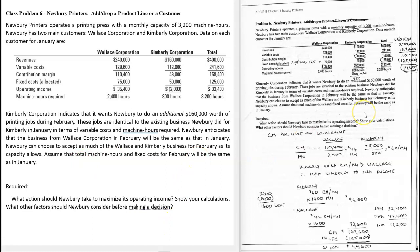So what should they do? Typically what I'll do with these problems is create a separate column that shows all the numbers without that piece of the business. Income without Kimberly: revenue would be $240,000 from Wallace, contribution margin would be $110,400, and allocated fixed costs would still be $125,000, giving an overall loss of $14,600. Those allocated fixed costs are big — a good-sized number, and you can't do anything about it.